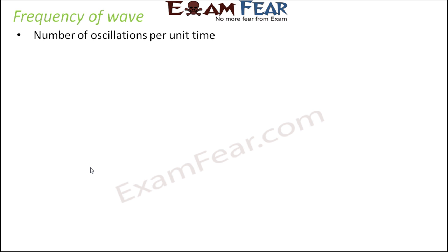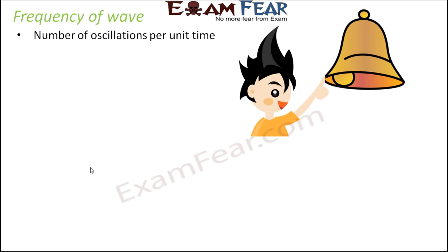What is frequency? It is the number of oscillations per unit time. To understand what that means, let us suppose when you ring a bell — the metal ball keeps oscillating. How many times it oscillated over a particular period of time, that denotes frequency.